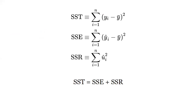Since SST measures the total sample variation in y_i, we write it as: summation from i equals one to n of (y_i minus ȳ) squared — how much y_i varies from the mean in the sample. Similarly, SSE is the summation of (ŷ_i minus ȳ) squared, and SSR is the summation of û_i squared.